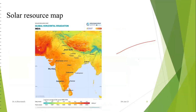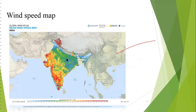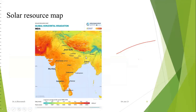The solar resource map shows that Rajasthan has India's highest solar intensity areas. The northeast states with Himalayan hills have very low wind and solar energy but have enormous water resources, so they generate electricity primarily from hydro power stations. Both the wind and solar maps help identify regions suited to different renewable energy types.